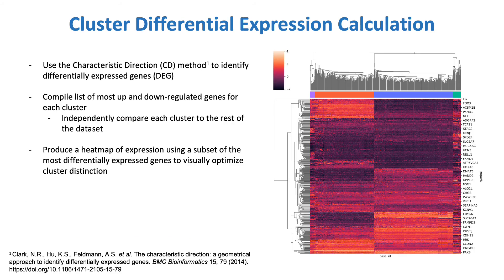I next find the most differentially expressed genes, or DEGs, for each cluster by calculating the characteristic direction for each gene and comparing it to the rest of the dataset to get the up- and down-regulated gene sets for each cluster. I then generate a hierarchically clustered heatmap of the DEG expression profiles, where the color coding along the top indicates cluster membership of each patient. Here we can see the existence of four clusters very clearly reflected in the heatmap.